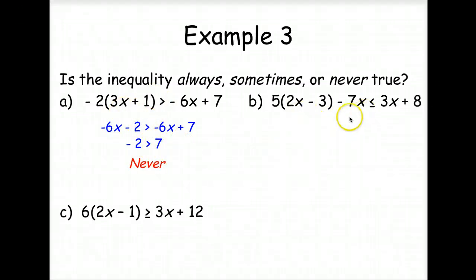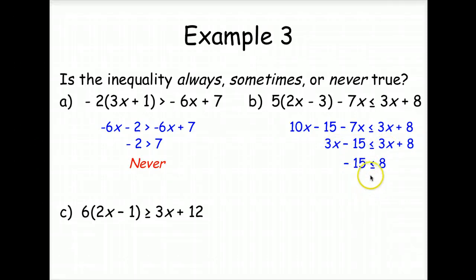Okay, let's start solving this one. We've got parentheses. We can use the distributive property. So 10x minus 15 minus 7 is less than or equal to 3x plus 8. Have some like terms here we can take care of. So 10x minus 7x is 3x. So let's subtract 3x from both sides. Is negative 15 less than or equal to 8? Always. So this one will always be true.